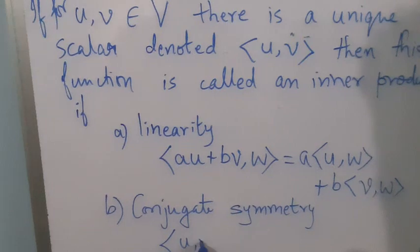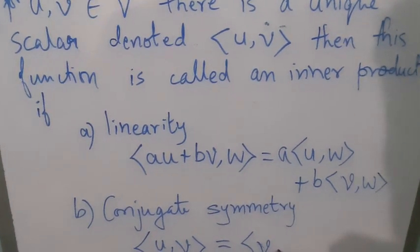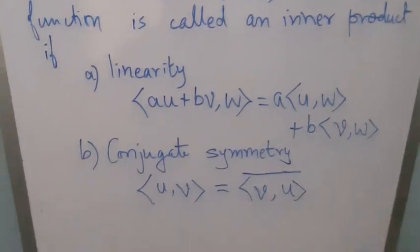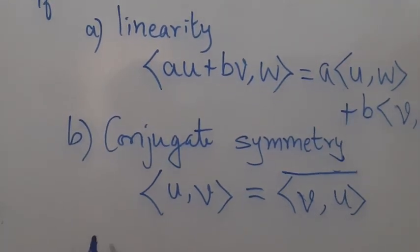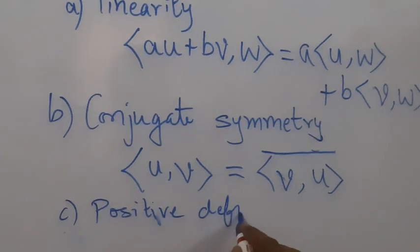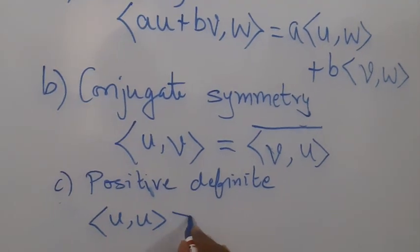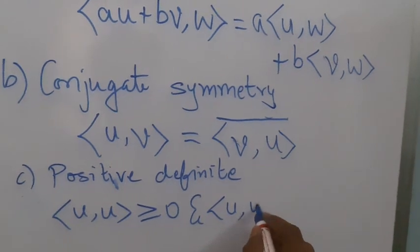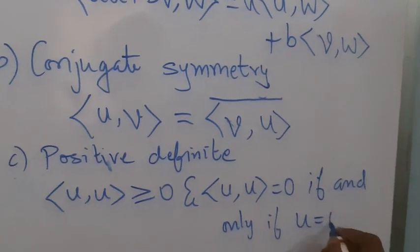The second property is conjugate symmetry — that is, when you swap the places of U and V, you get the conjugate. The third property is the positive definite property: the inner product of U with itself is always greater than or equal to zero, and equality holds — that is, we get zero — if and only if we are finding the inner product of the zero vector.